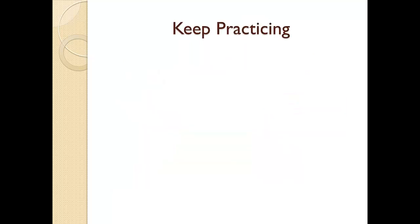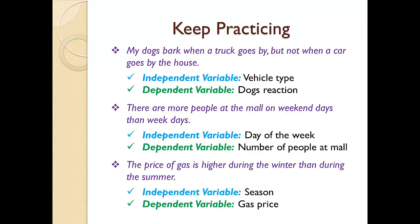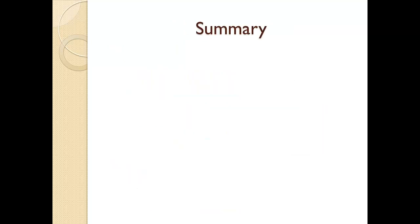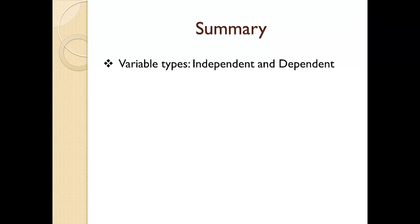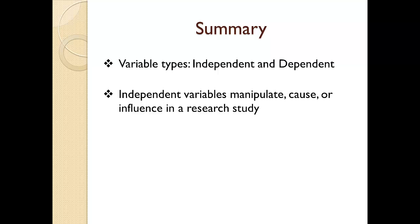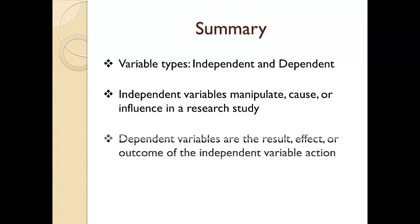I've given you the basics you need to understand variables. However, the secret to how I reinforce this information for myself was that I kept practicing. I practiced by looking at everyday scenarios in my life. Start breaking down things you observe in your everyday life and before you know it, you will get the hang of how variables work in a research study. To summarize: there are two types of variables — independent and dependent. Independent variables manipulate, cause, or influence a reaction in a research study. Dependent variables are the result, effect, or outcome of the action taken by the independent variable. Finally, the best way to understand variables is to keep practicing it in your everyday life.